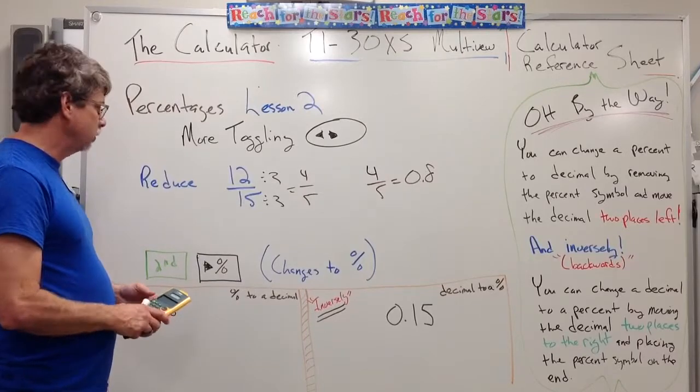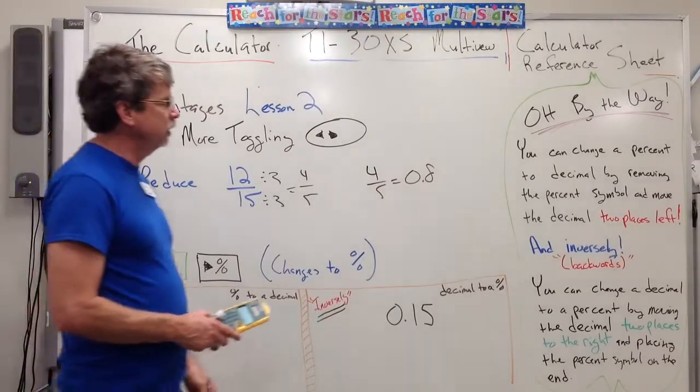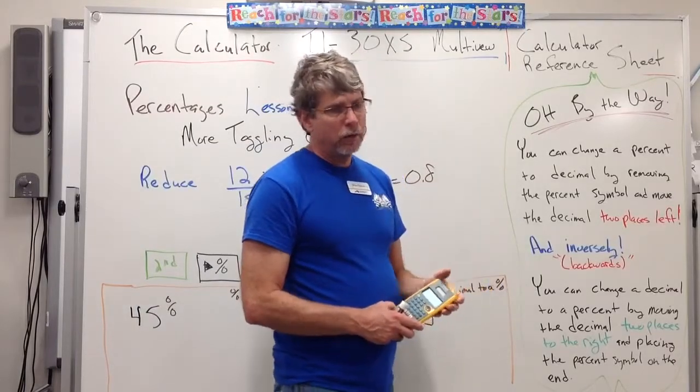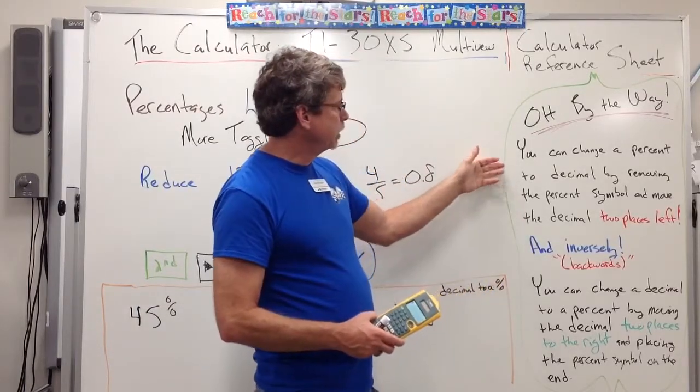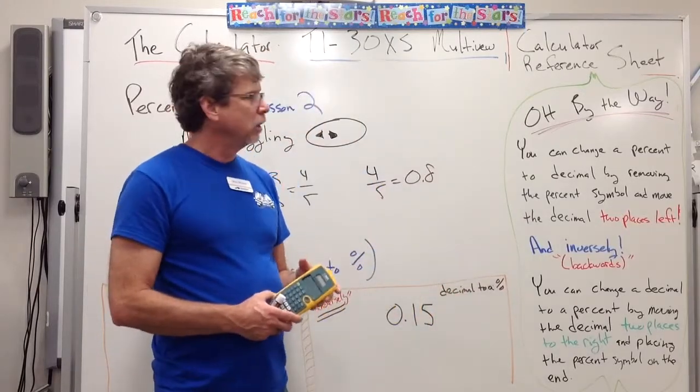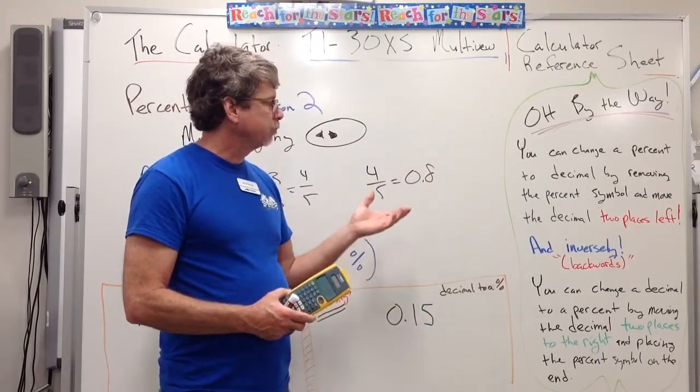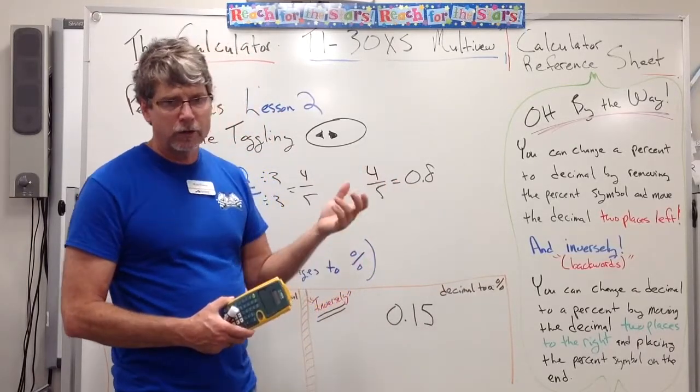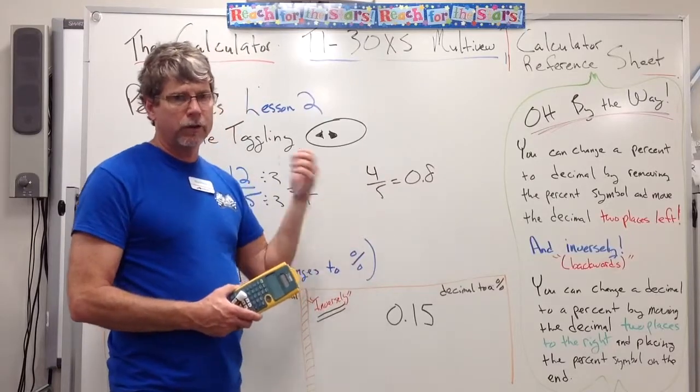Something else we could do is bring to your attention some other things about percentages. By the way, you can change a percent to a decimal pretty easily without a calculator. You could just remove the percent symbol and then just move the decimal two places to the left, and that will give you your percent to a decimal.